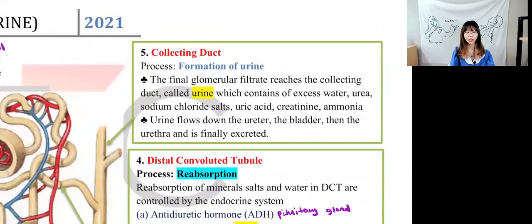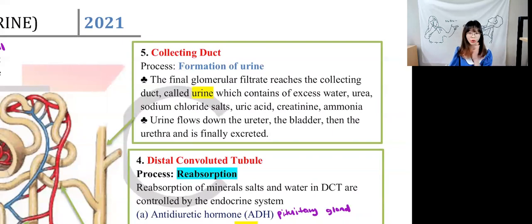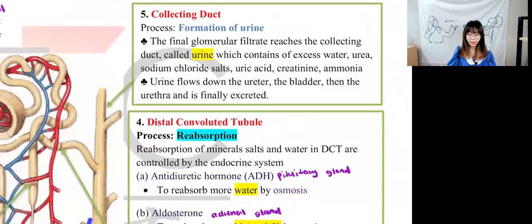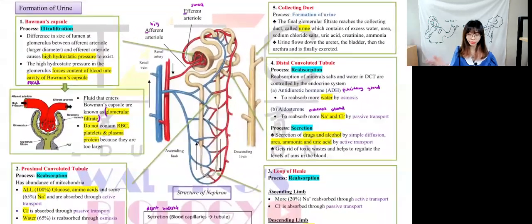The collecting duct can also carry out reabsorption of NaCl and water, depending on permeability and body conditions. Urine is formed from all of these processes and contains water, urea, NaCl, uric acid, creatinine, and ammonia — only the excess amounts. Urine travels from the collecting duct to the ureter, then to the bladder, and is removed from the body. This urine composition question is very popular in exams.